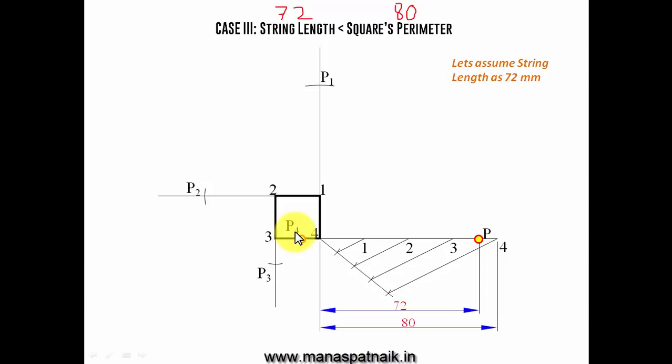And when you join all these points, obviously, the curve that you're going to have is known as an involute. So, guys, this was basically the three conditions that you may come across. So, that was all for today.